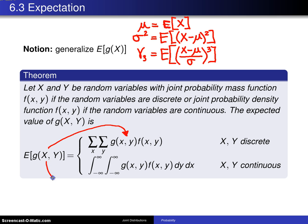If X and Y are continuous, then the expected value of g of X, Y will be g of x, y multiplied by the probability density function over the support. And generically, you can put that as both limits from minus infinity to infinity.